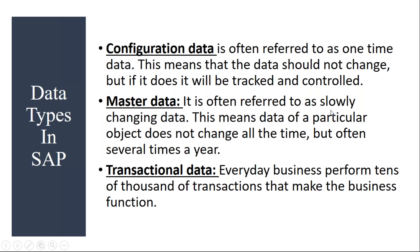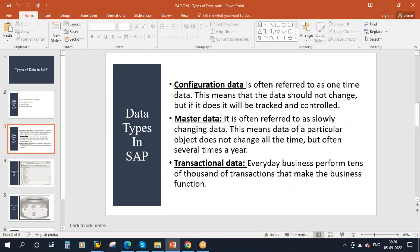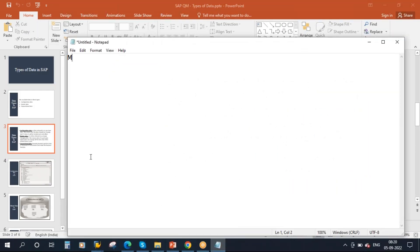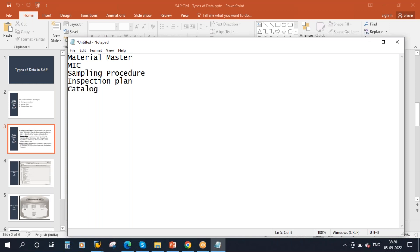Master data is often referred to as slowly changing data. This means data of a particular object does not change all the time, but often changes several times a year. To have master data, first you have to have the configuration data. In the QM module, the master data includes material master, MIS, sampling procedure, and inspection plan. These are some of the master data in the QM module.